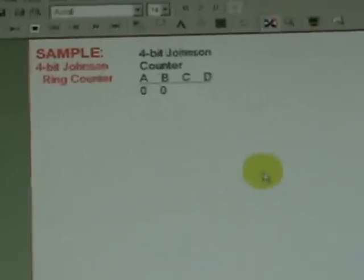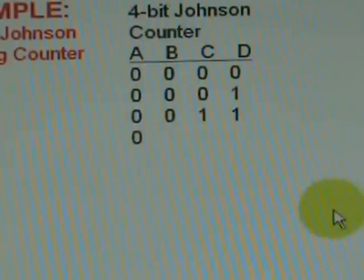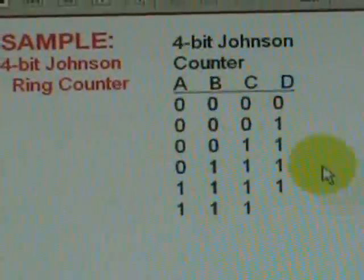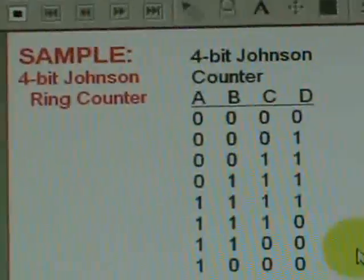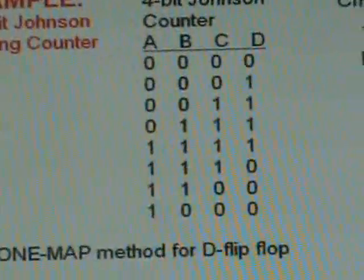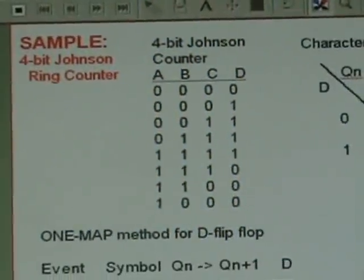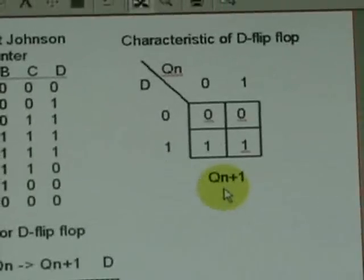We're designing a 4-bit Johnson ring counter whose truth table is shown here. We are going to employ a D flip-flop whose characteristic is as indicated.